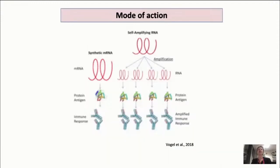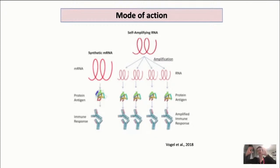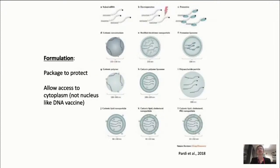There are two types of mRNA vaccine: synthetic RNA, which is placed into the cell where it is translated into the protein antigen; and self-amplifying RNA, which has a signal to make copies of itself inside the cell, producing more RNA and thus more protein — hopefully a better immune response. The RNA must be packaged and protected — using lipid nanoparticles or liposomes — so it isn't destroyed before reaching the target cell, while still allowing release into the cytoplasm.